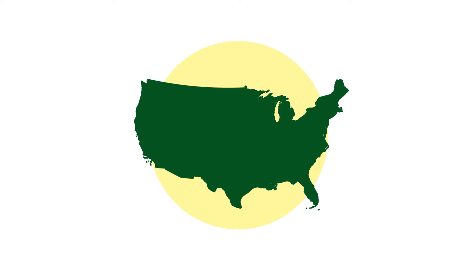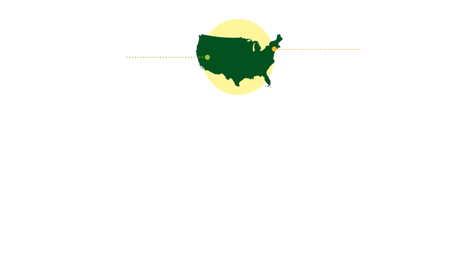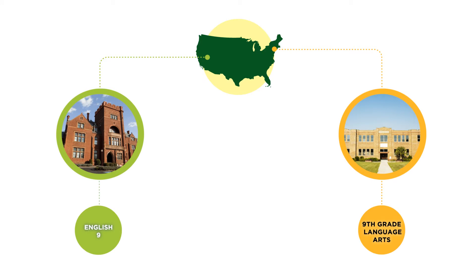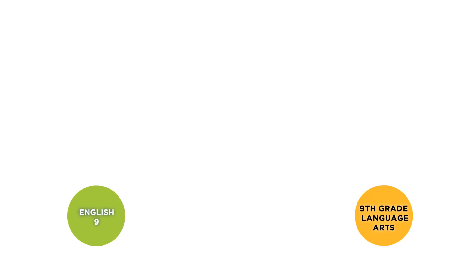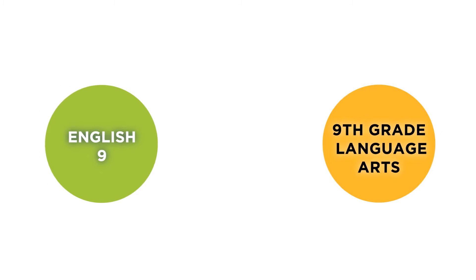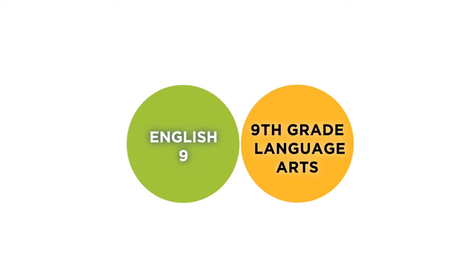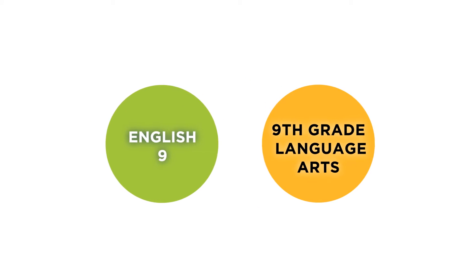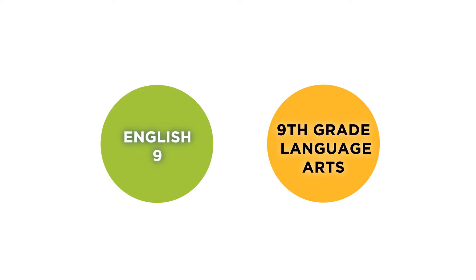Across the country, schools teach thousands of courses to millions of students. To keep track of these courses, schools assign numbers or course codes to each course. If different schools use different codes for the same course, it can be difficult to compare information. You can begin to see the challenges when you compare a course that two schools have named differently.